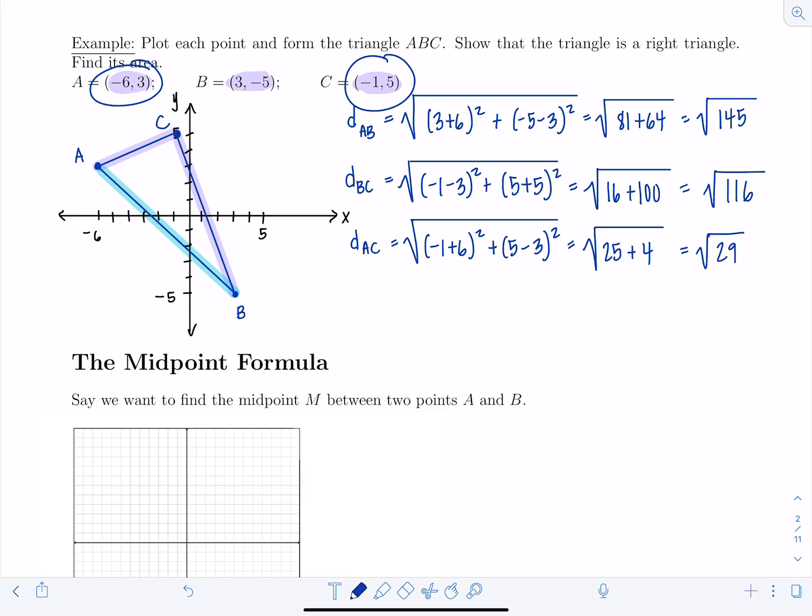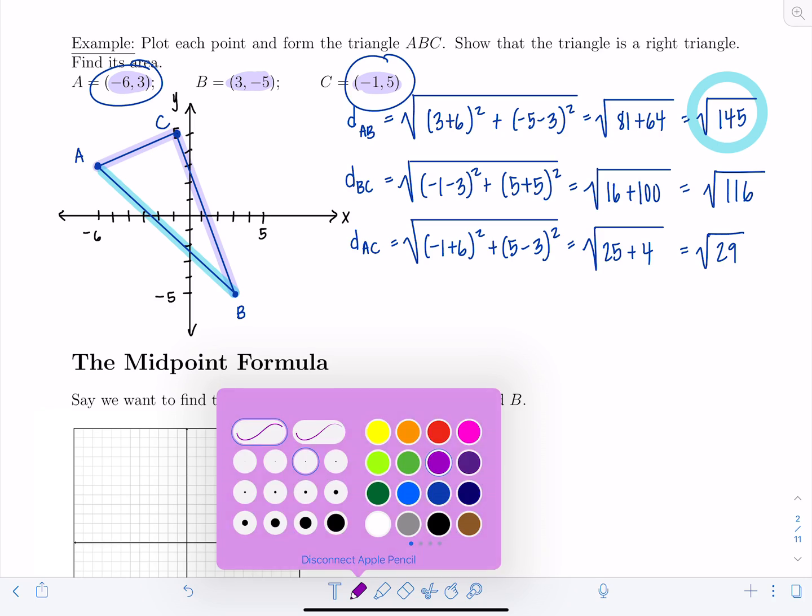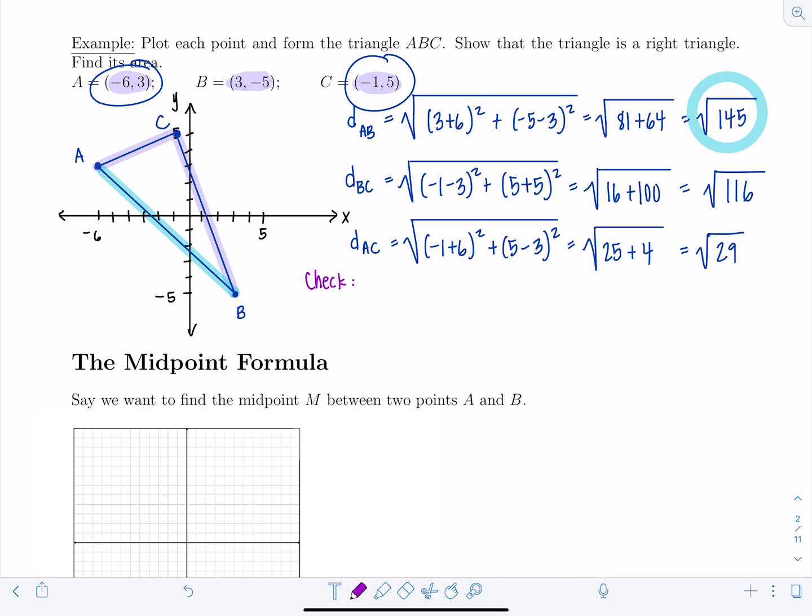So of these three lengths of these three sides, which one's the largest? Well, clearly √145, right? The other two are smaller numbers. So what I want to do in order to confirm whether or not this is a right triangle is check. That would be the hypotenuse if it was, right? If it was a right triangle, that would be the hypotenuse. So is the distance from A to B squared equal to the distance from B to C squared plus the distance from A to C squared? Well, let's see. If I square the square root of 145, it's just 145. Does that equal squaring √116? It's just 116 + 29. It sure is. Yes, we showed it.